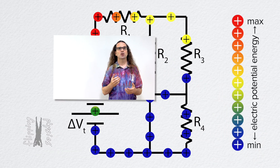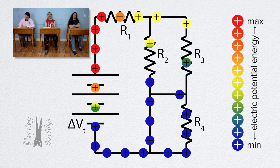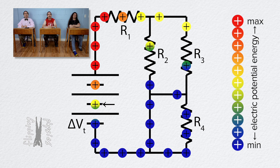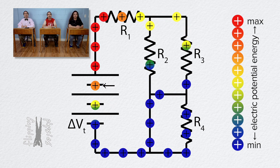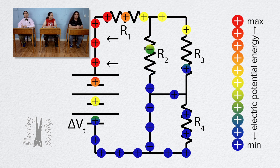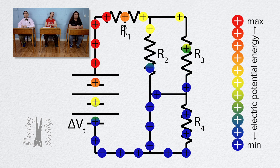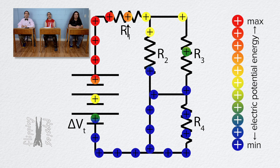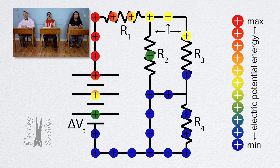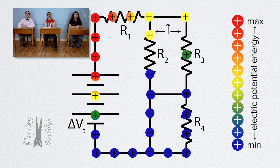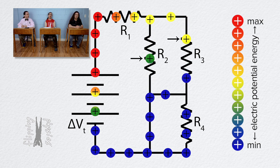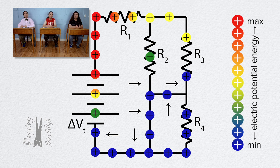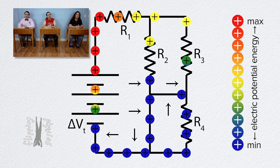Let's take a moment to look at the animation of the charges moving through the circuit. Positive charges increase electric potential energy from the minimum shown in blue to the maximum shown in red as they go through the battery. Then the charges maintain their maximum electric potential energy until they get to resistor 1, where some of their electric potential energy is dissipated as heat, which is why their color changes from red to orange to yellow. The electric potential energy of the charges stays the same at yellow until they get to resistors 2 and 3 and split between the two. As the charges go through resistors 2 and 3, their electric potential energy decreases, which is why their color goes from yellow to green to blue, then stays blue until they get back to the battery.